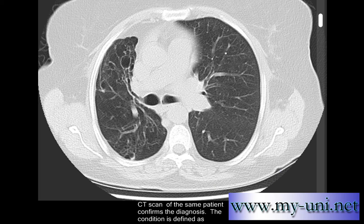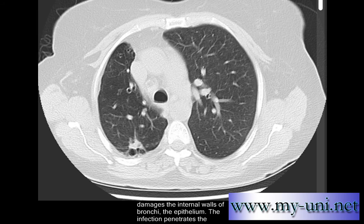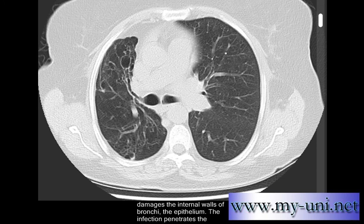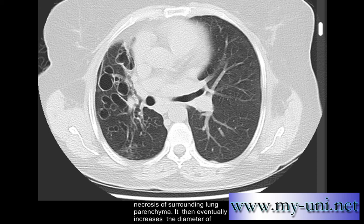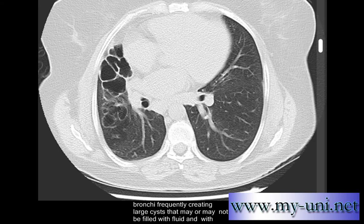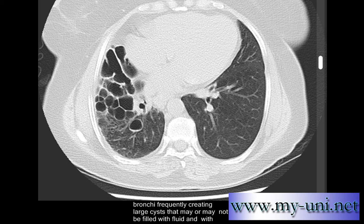Bronchiectasis is defined as irreversible dilatation of bronchi, usually caused by and coexisting with chronic infection that damages the internal walls of the bronchi — the epithelium. The infection penetrates the bronchial walls, causing swelling and inflammation of the submucosa, necrosis of the surrounding lung parenchyma, and necrosis of tissue in the bronchial walls as well. It eventually increases the diameter of the bronchi, frequently creating large cysts as in this case.